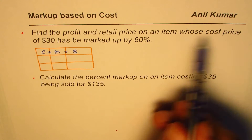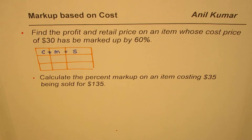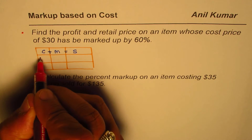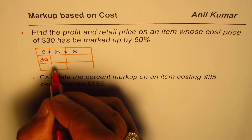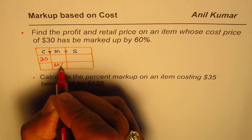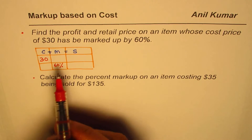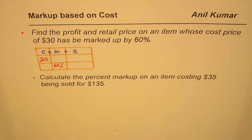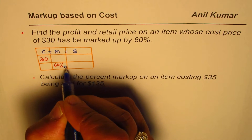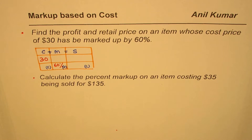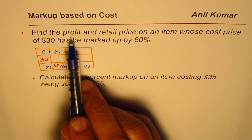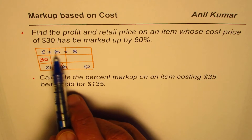We are given cost price of $30, and that has been marked up by 60%. Now this markup is always on the cost price if not specified — everything is to the base of cost price.